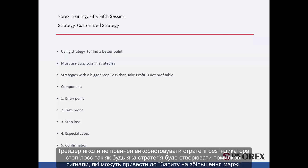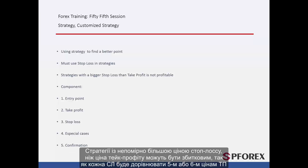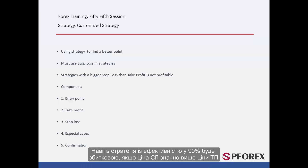A trader must never utilise strategies without a stop loss indicator, since any strategy would generate false signals that may result in a margin call. A trader must use a strategy with a longer stop loss price rather than take profit, as this may be unprofitable since every SL would equal 5 to 6 TP prices. Even a strategy with an efficiency of 90% would be unprofitable if the SL price is considerably higher than the TP price.